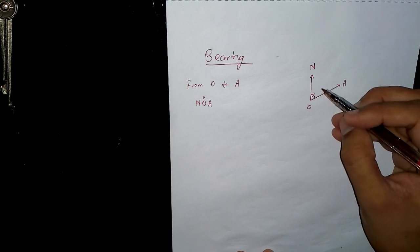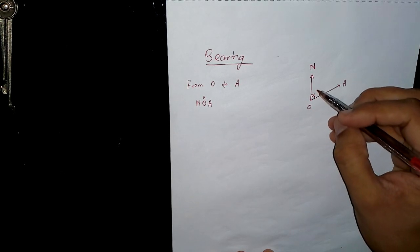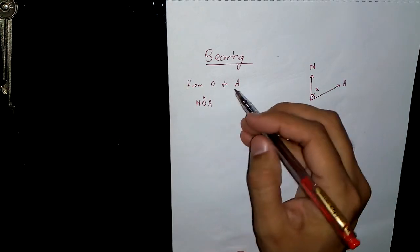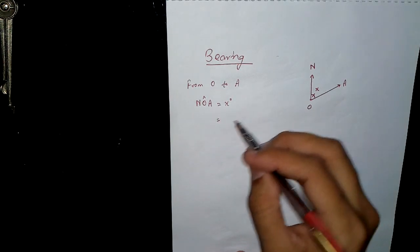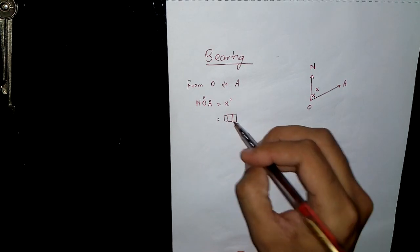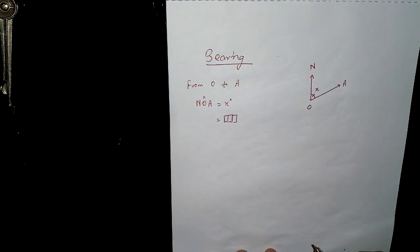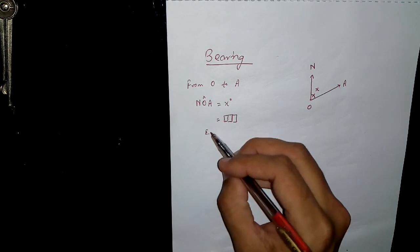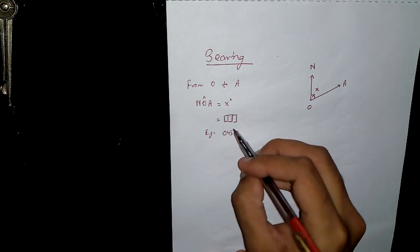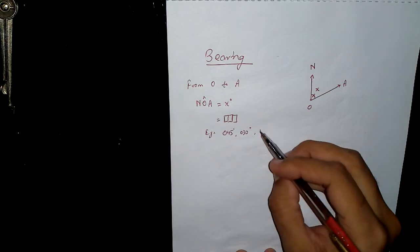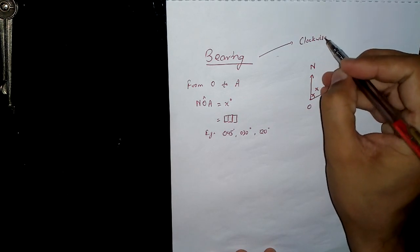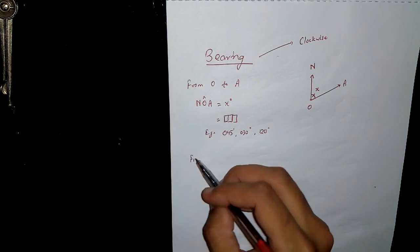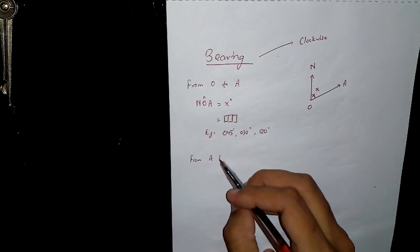So whatever the angle is, let's call it X — so from O to A it will be X degrees. Remember it should be a 3-digit number. For suppose if the angle is not a 3-digit number, like 40, 45, or 30, we will write 040, 045, 030, 120. Bearing should always be clockwise.